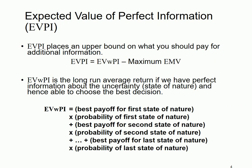Now I'd like to introduce another term: the expected value of perfect information, or EVPI. EVPI essentially tells you how much you should pay at most for additional information. When making decisions under risk, there are organizations or opportunities that can give you additional information about the uncertainty to improve your quality of decision, but they usually come at a cost. So EVPI tells you how much you should pay at most for that additional information.